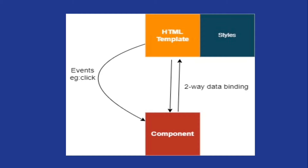Angular applications are built on components. Components comprise three files: the component.ts file, component.html file, and component styles file. These three files together make up an Angular component. The communication between the component.ts file and the HTML file supports two-way binding, meaning data can flow bi-directionally — from HTML to the ts file and from the ts file to HTML.